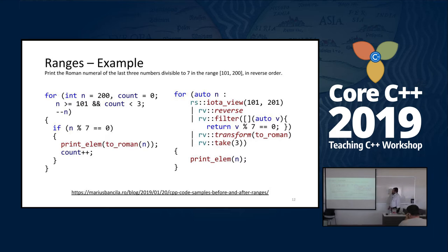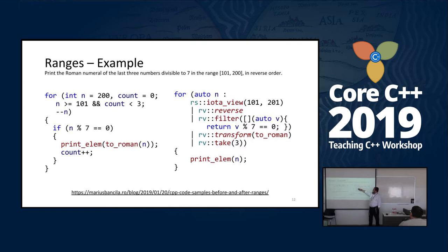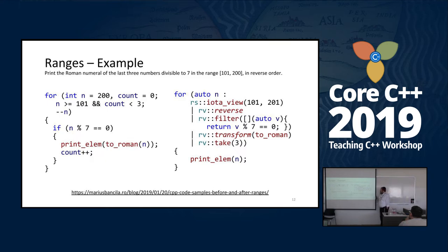This is a bit long but still much more readable than the imperative approach. One interesting point is that it's as efficient as the loop version because this is a view — the view fetches the next element only when we ask for it, like an iterator. Everything is lazily evaluated, so the actual evaluation happens only when we iterate over it.